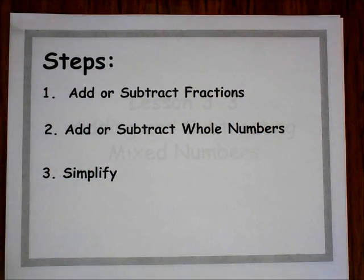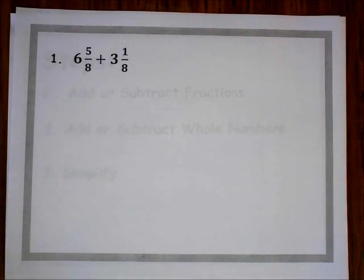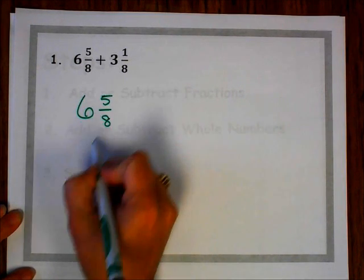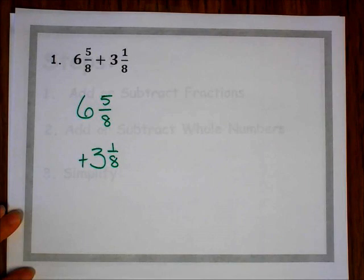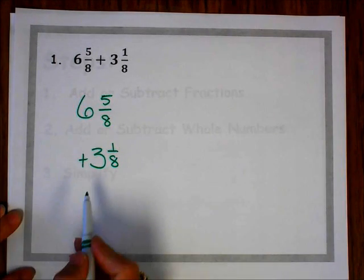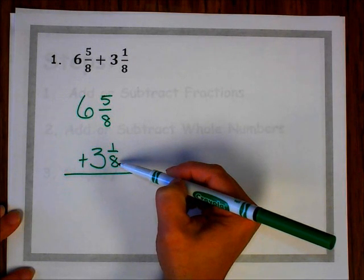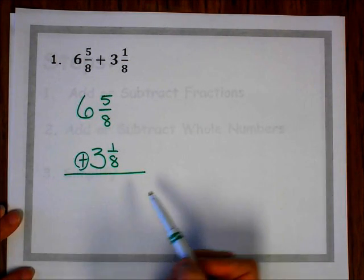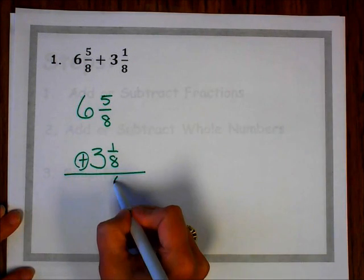So let's do some examples together. Question number 1 says 6 and 5 eighths plus 3 and 1 eighth. I want you to notice that my denominators are already equivalent, so I don't have to find a common denominator — it's already been done for me. Notice this is an addition problem, so I'm going to add the fractions: 5 eighths plus 1 eighth is 6 eighths.